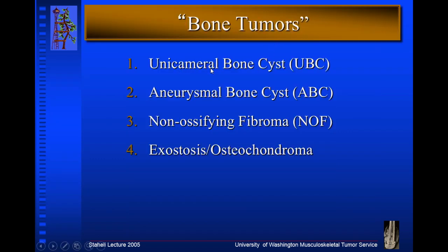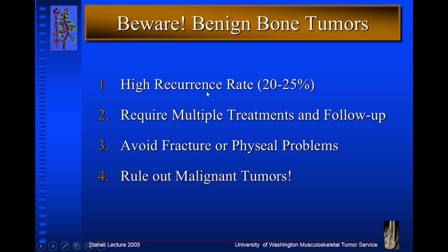The most common tumors: simple bone cysts — what we refer to as unicameral bone cysts — usually have fluid in them. Aneurysmal bone cysts have tissue in them, not completely fluid like a unicameral bone cyst. Non-ossifying fibroma, referred to as an NOF or fibrous cortical defect, is a very benign fibrous tumor in the cortex. These tumors are important because for every malignant tumor we will see 30 or 40 benign bone tumors. They are very common and have a very high recurrence rate. Unicameral bone cysts have a recurrence rate after injection of anywhere from 30 to 50 percent, so multiple injections are required for treatment rather than open surgery.